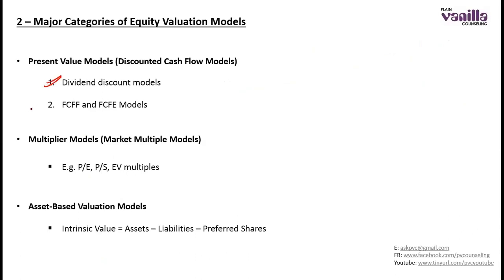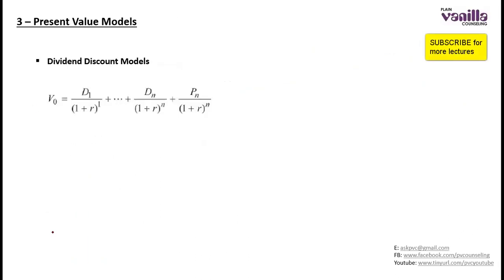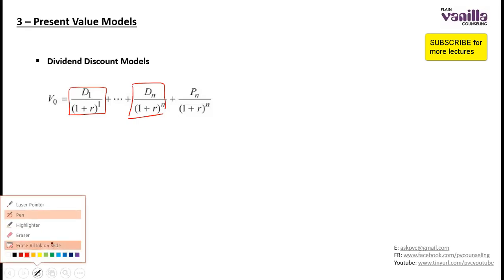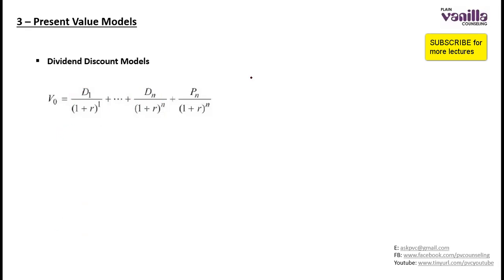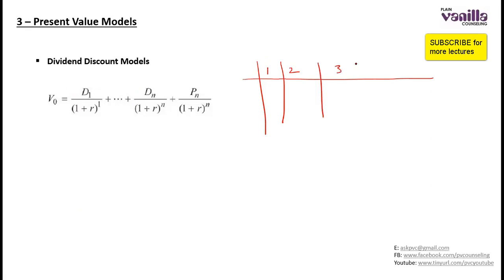We will start with the first one, which is the dividend discount model. So how do you calculate value from the dividend discount model? You forecast future dividends and then calculate the present value of all the dividends, and that will give you the value of the company. Let's say there is a company which pays a dividend every year and you expect it will continue to pay dividends, so dividend is the right metric to calculate its value.